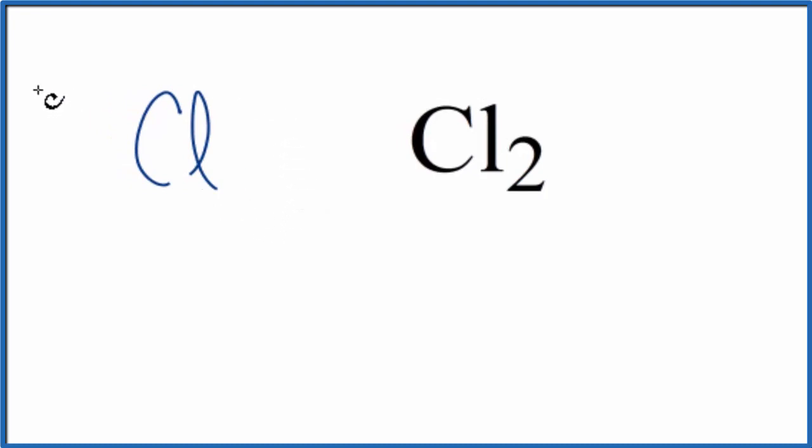Now, of course, you could have something like HCl with just one chlorine, but that's because the chlorine is bonded to the hydrogen. If it's just by itself, it's going to be Cl2.